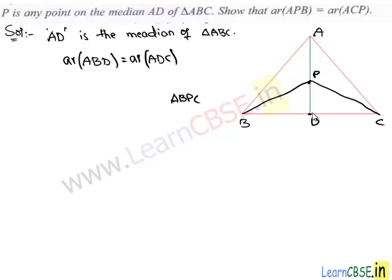In this triangle BPC, PD is median. Again, as we consider above, median PD divides the triangle into two triangles of equal area. Therefore, area of triangle PBD is equal to area of triangle PDC.